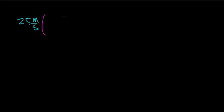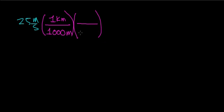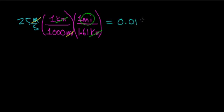My first step is to multiply by a conversion factor taking me from meters to kilometers: 1,000 meters equals 1 kilometer. Then I multiply by a conversion factor from kilometers to miles: 1.61 kilometers equals 1 mile. The unit of meters cancels with meters, and kilometers cancels with kilometers, leaving units of miles. Multiplying the numerators and dividing by the denominators gives 0.0155 miles per second.